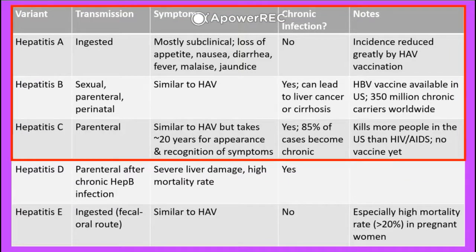Hepatitis B is caused by a virus. Its transmission can be sexual, parenteral, or perinatal. It is similar to hepatitis A in symptoms such as appetite loss, nausea, diarrhea, fever, malaise, and jaundice. Unlike hepatitis A, it is a chronic infection and can lead to liver cancer or liver cirrhosis. Like hepatitis A, there is a vaccine for hepatitis B.